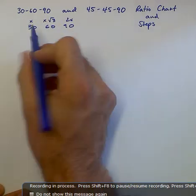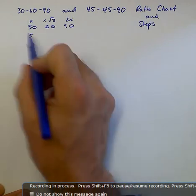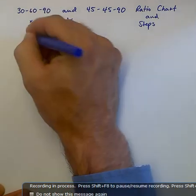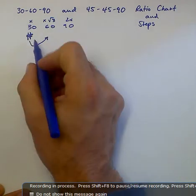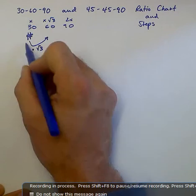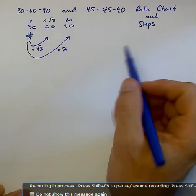So basically, if they give you the 30, let's say they give you 5, let's not even use a number, let's just say the number's here. If you get the 30, to get the other two sides, you multiply by square root of 3, or you multiply by 2. And this is what I'm going to do, I'm going to take you through this chart a little bit.